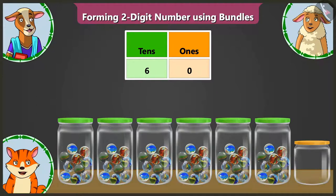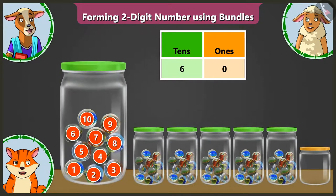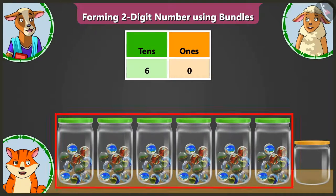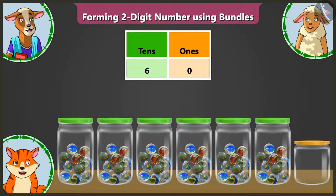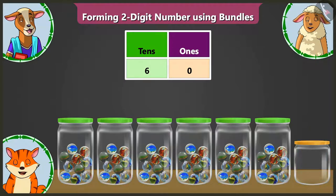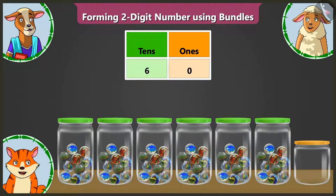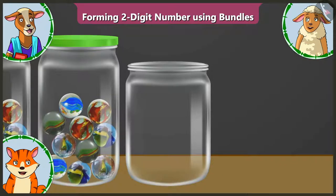Understood, children? A group of 10 objects is called one group of 10s. Similarly, whatever is the number of groups you have, you have to write that number in the 10s box. And when there is not even one object in the group, you have to write 0 in the ones box. We understood. Now, look.